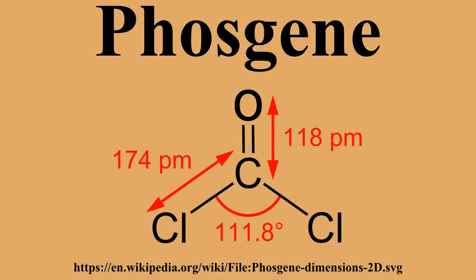Phosgene was synthesized by the Cornish chemist John Davy in 1812 by exposing a mixture of carbon monoxide and chlorine to sunlight. He named it phosgene in reference to the use of light to promote the reaction, from the Greek. It gradually became important in the chemical industry as the 19th century progressed, particularly in dye manufacturing, and saw extensive use as a chemical warfare agent during World War I.